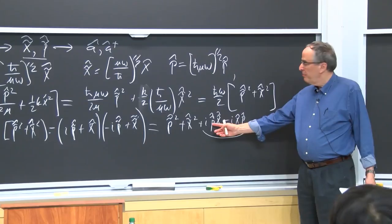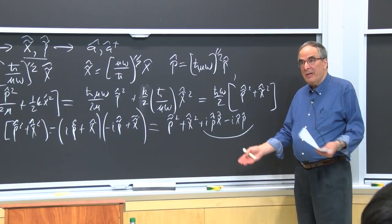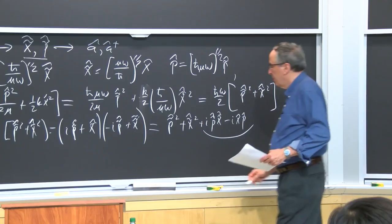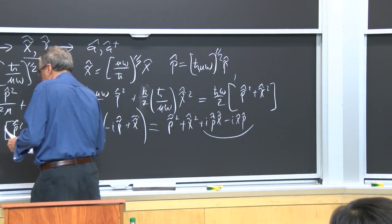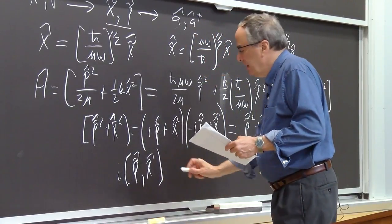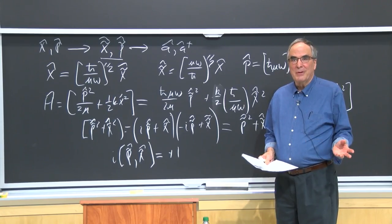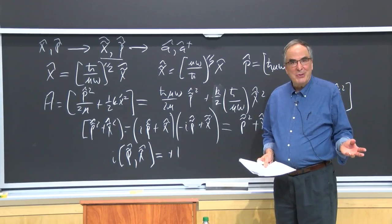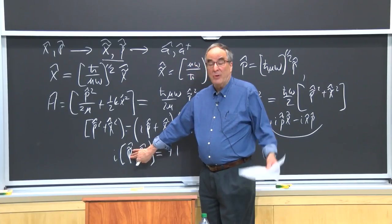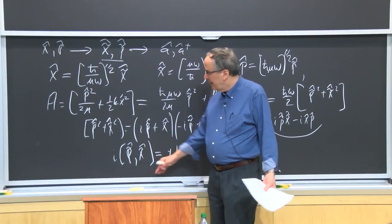We have something that looks like i times the commutator of p̃ with x̃. We can work that out because we know the commutator of ordinary p with ordinary x. After some algebra, we get the commutator [p̃, x̃] equals +1, a pure number. You just substitute in what p̃ and x̃ are in terms of ordinary p and x, use the commutator for ordinary xp which is iℏ, and magically you get +1.